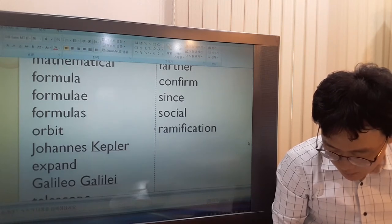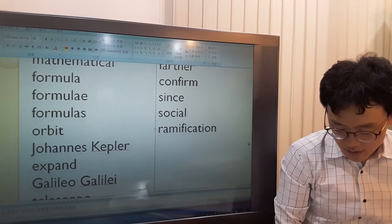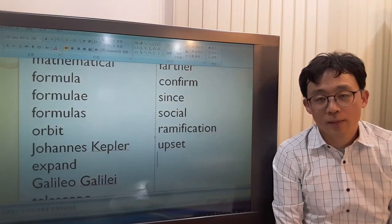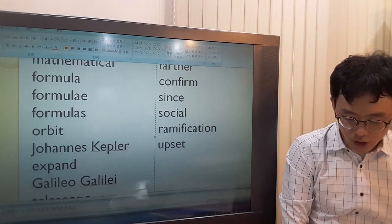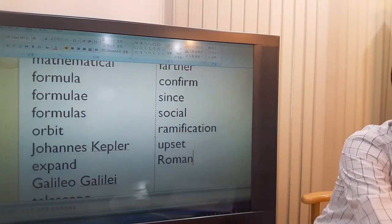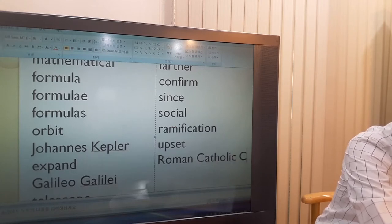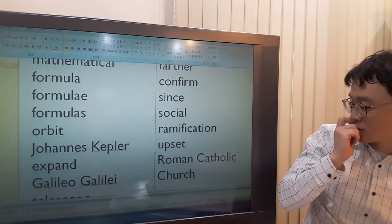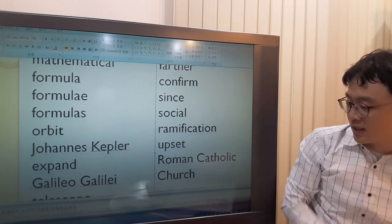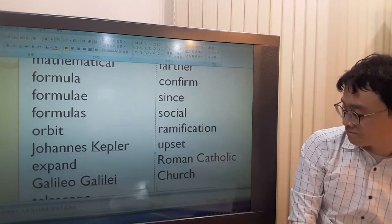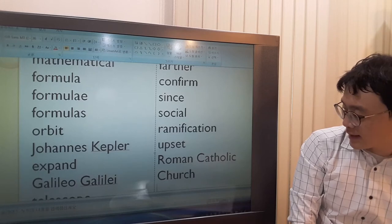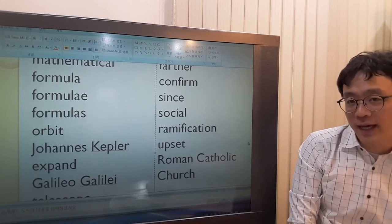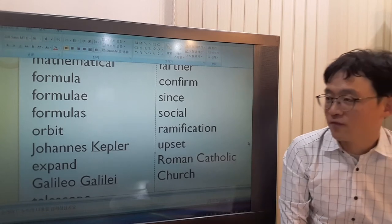One of them was that he really upset the Roman Catholic Church with his theories. Upset means to make someone feel unhappy. What does Roman mean? Roman means relating to Rome. Catholic Church - what does Catholic mean? Catholic is Christian which has the Pope as its leader, based in Vatican in Rome.